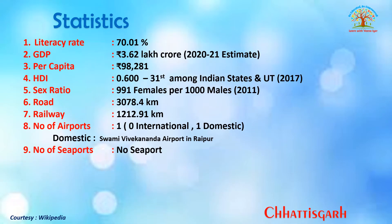The literacy rate of the state is 70.01%. The GDP is ₹3.62 lakh crore as per 2021 estimate. The per capita income is ₹98,281. The Human Development Index is 0.600, ranking 31st among all Indian states and union territories as per the 2017 survey. The sex ratio is 991 females per thousand males as per the 2011 census.